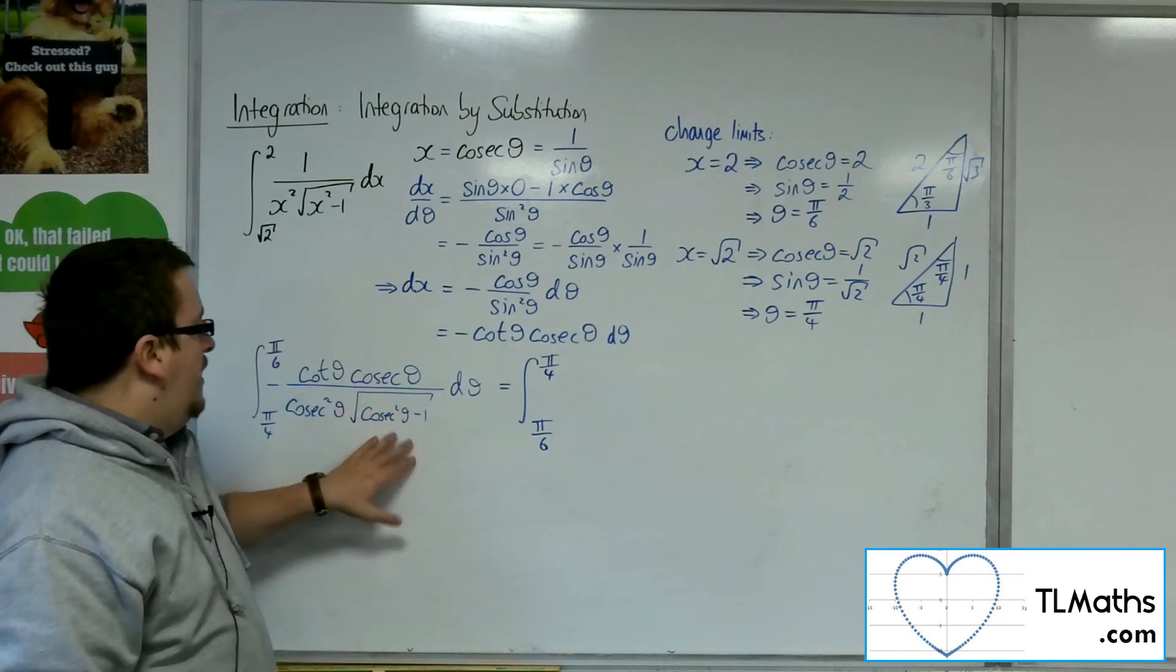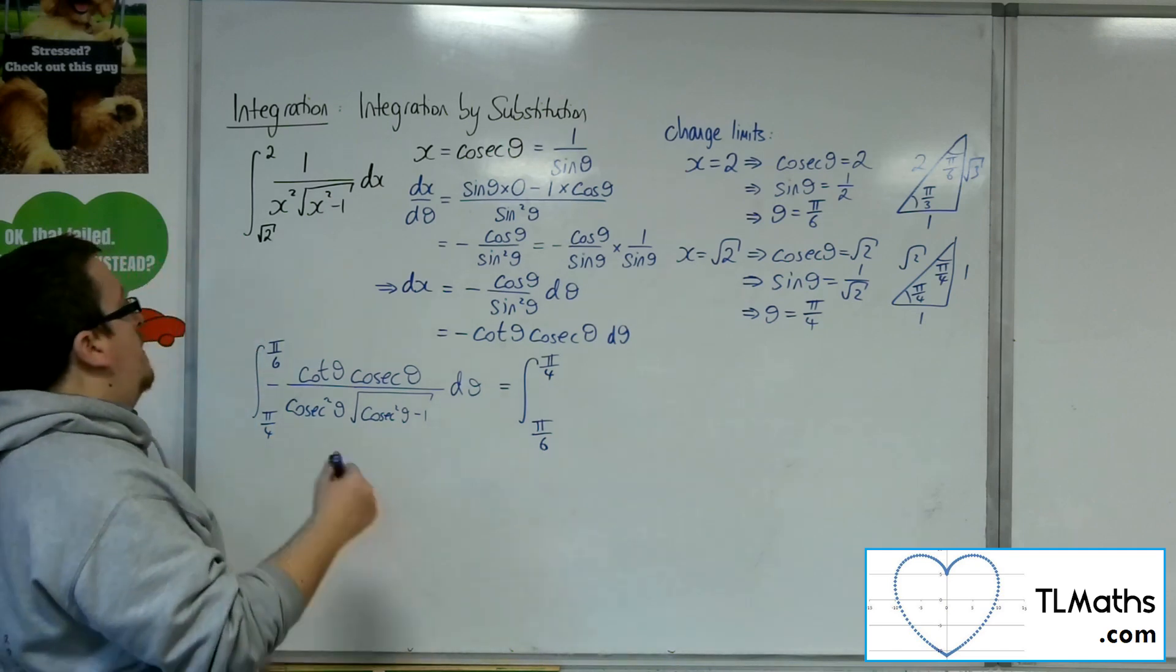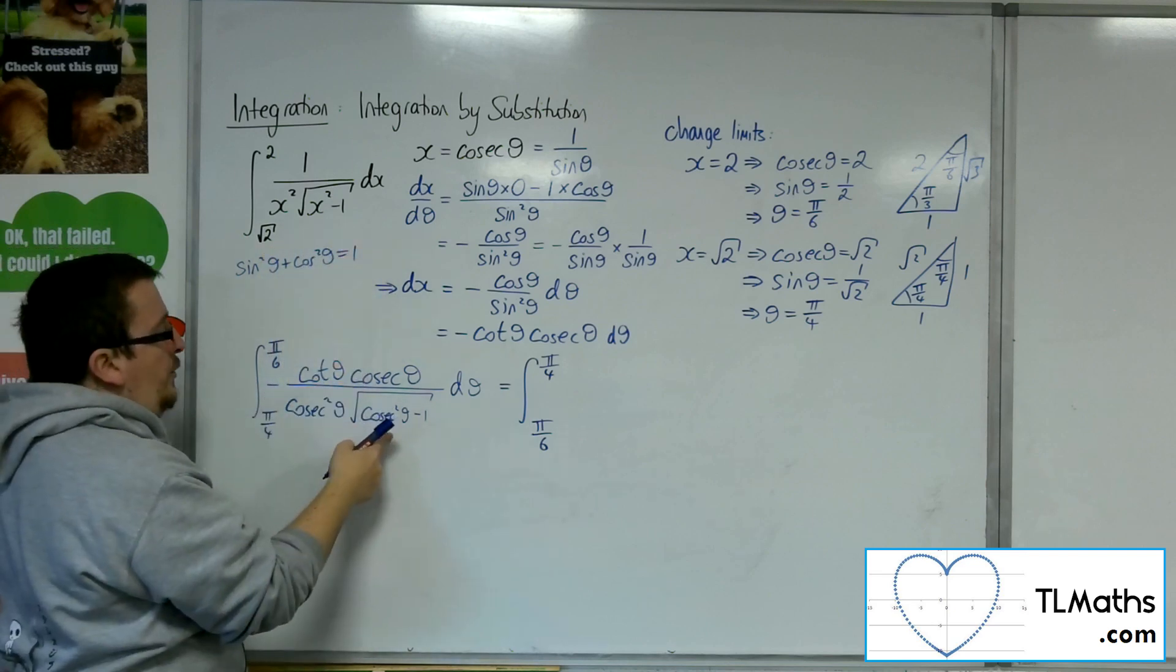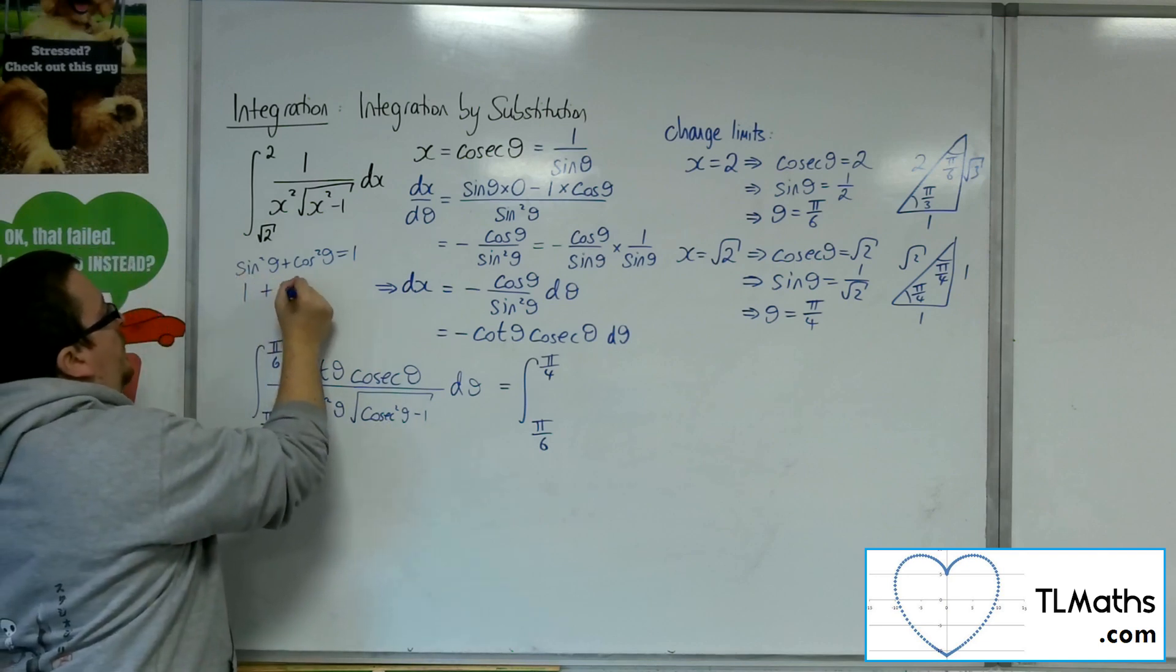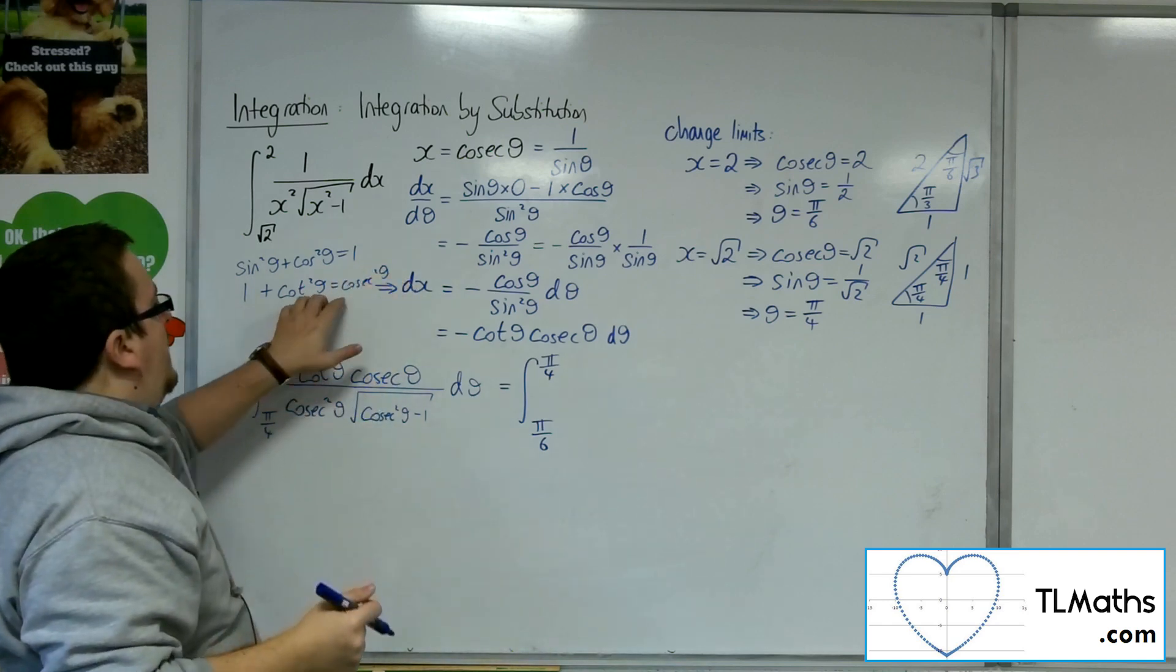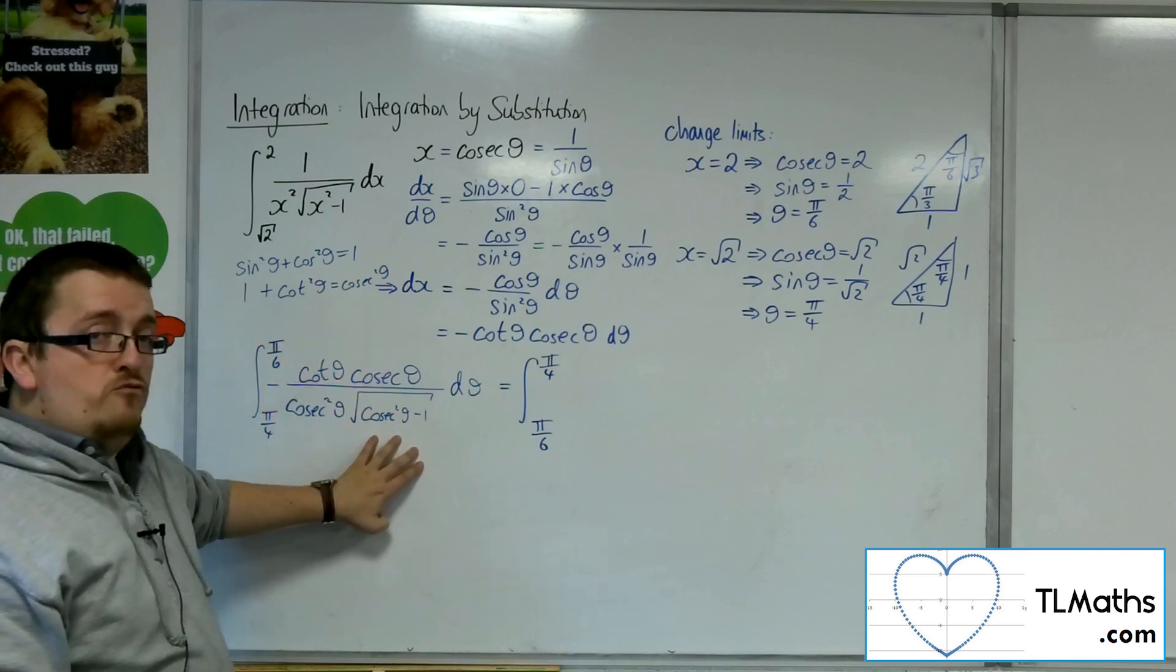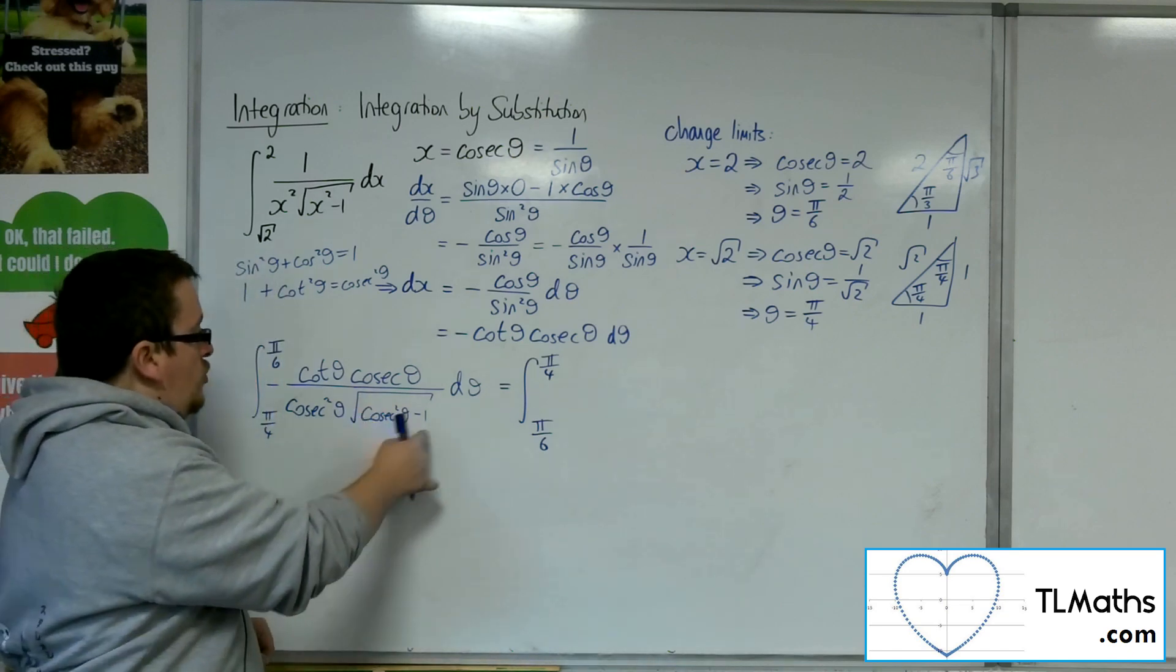Now what else have I got? I've got this cosec squared minus 1 down here. Now if you remember back to your trig identities, sine squared plus cos squared is 1. Now to get cosec squared, I need to divide through by sine squared. So that would be 1 plus cot squared theta is cosec squared theta. So I've got this identity here. So cosec squared minus 1 must be cot squared. And then I'm square rooting cot squared. So that here should just be cot theta.